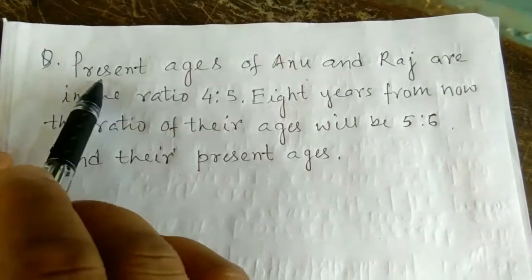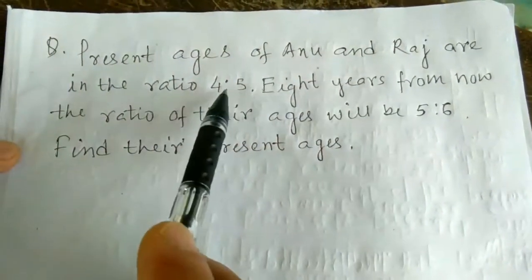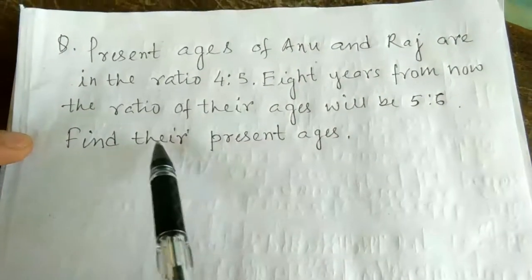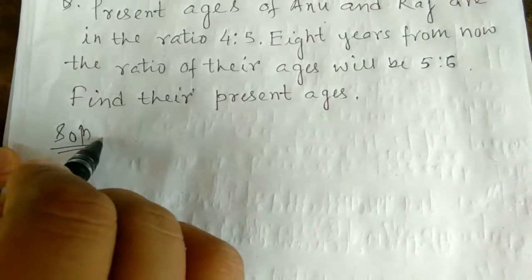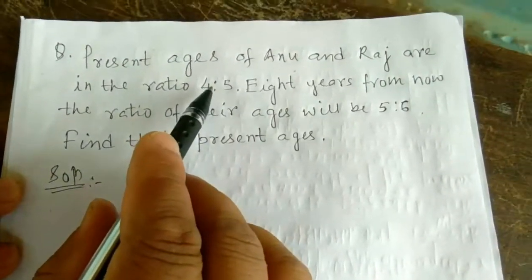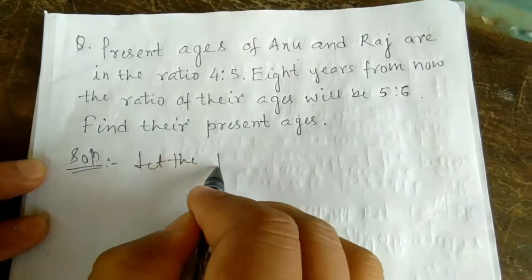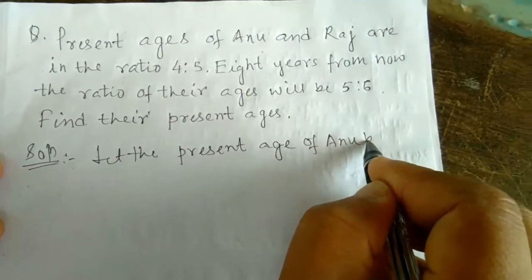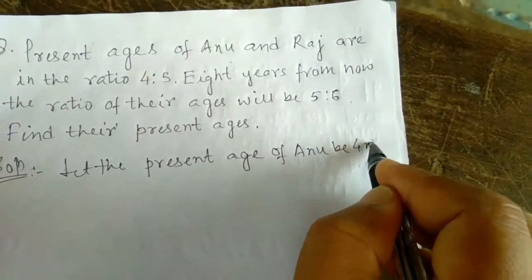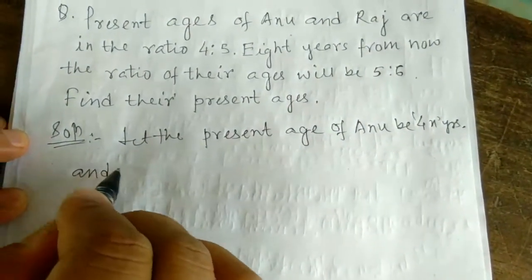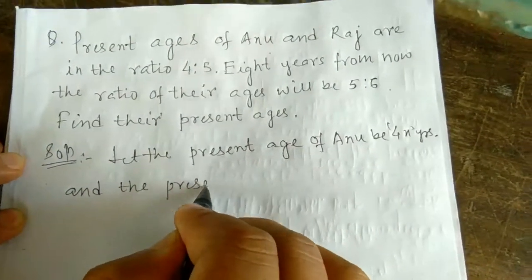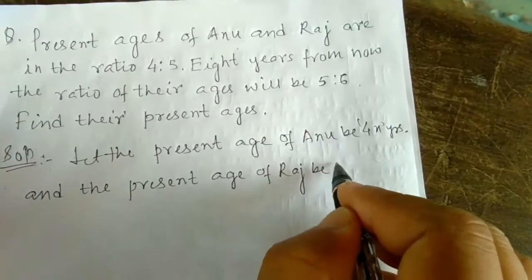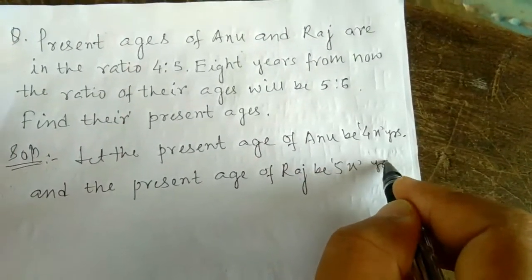Last question: the present ages of Anu and Raj are in the ratio 4 is to 5. Eight years from now, the ratio of their ages will be 5 is to 6. Find their present ages. Whenever ratios are given, take: let the present age of Anu be 4x years and the present age of Raj be 5x years.